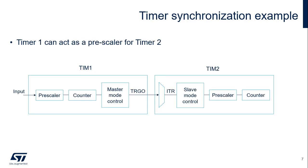This slide shows a simple example of timer synchronization. Timer 1 is used as the master timer and can reset, start, stop, or clock timer 2 configured in slave mode. In this example, timer 1 is clocking timer 2 so that it acts as a pre-scaler for timer 2.